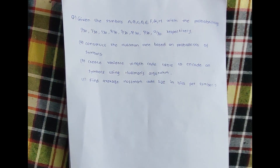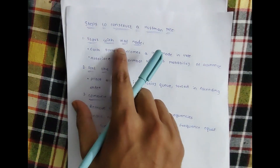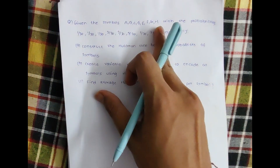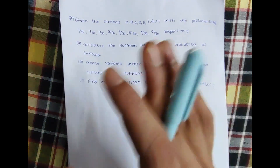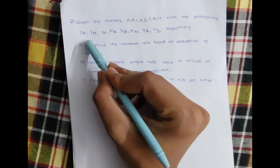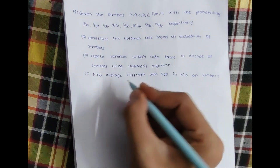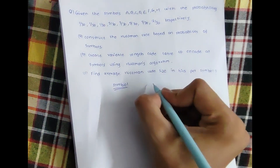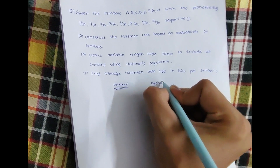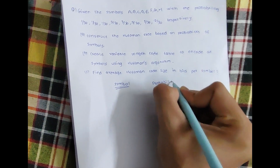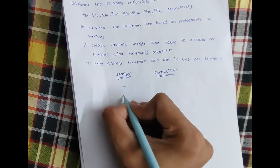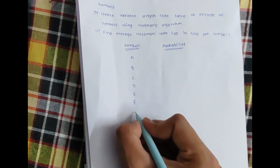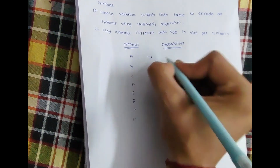The first step is to start with leaf nodes — each symbol becomes a leaf node in the tree, associated with its probability. So we write the symbols a, b, c, d, e, f, g, h alongside their respective probabilities: a = 1/30, b = 1/30, c = 1/30, d = 2/30, e = 3/30, f = 5/30, g = 5/30, h = 12/30.